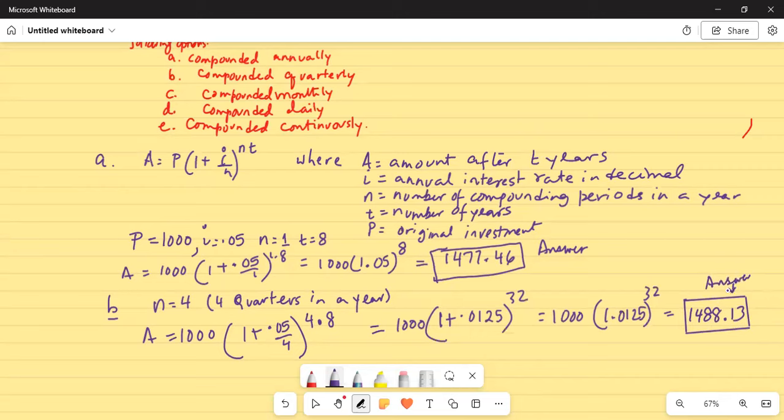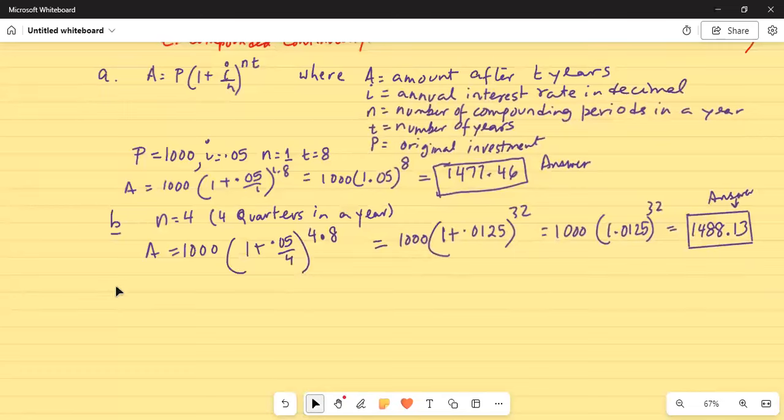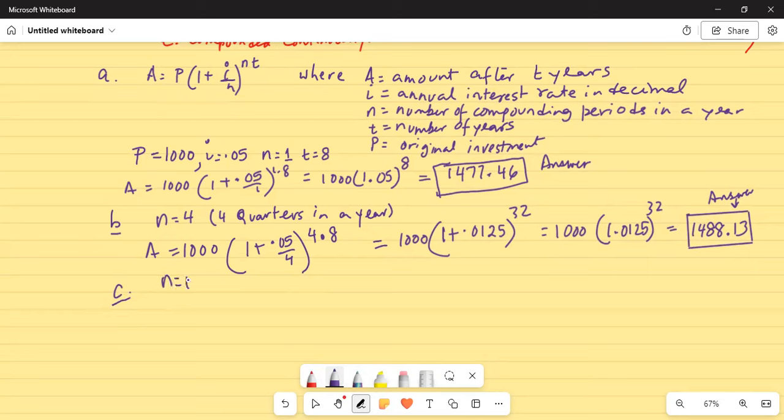Now we will create some space and move further up. Next is compounded monthly. So part C is compounded monthly. Monthly means compounding period is 12, 12 months in a year. So you have A is equal to 1000 times (1 + 0.05/12).